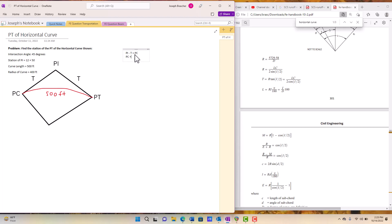PI minus T is going to equal PC, and then PC plus L is how we get the PT. So that's how we're going to end up solving this one.